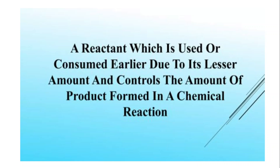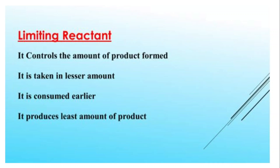Sab se pehle hum define karte hain: what is limiting reactant? A reactant which is used or consumed earlier due to its lesser amount and controls the amount of the product formed in a chemical reaction. Is definition ke doh components hain: aisa reactant jo jaldi consume ho jaata hai apni kam miktar ki wajah se, aur secondly yeh chemical reaction mein product ki amount ko control karta hai. Usse kehte hain limiting reactant.